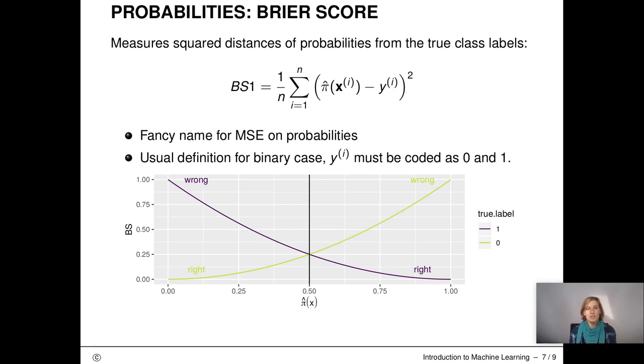So Brier score is merely a fancy name for mean squared error on probabilities. The different definition written down here is for the binary case. The figure shows the Brier score on the y-axis and the predicted probabilities on the x-axis. Let's say that we have an observation where the true label is zero. Then lower predicted probabilities are better, of course. The green curve shows that the Brier score is low for low predicted probabilities and high for high predicted probabilities. The violet curve shows the Brier score values for an observation where the true label is one. The curve is mirrored. So a high error if the predicted probability is low and a low error if it is high. Makes sense, right?